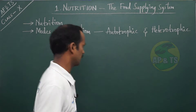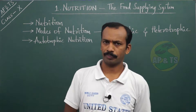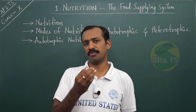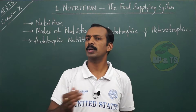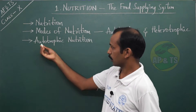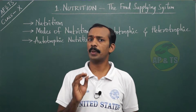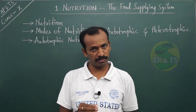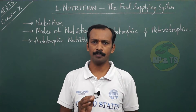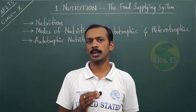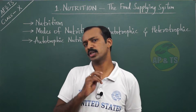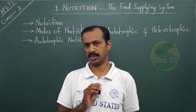What is autotrophic nutrition? Autotrophic nutrition is the type of nutrition in which living organisms obtain food by themselves. They don't depend on others; instead, they prepare their own food by a process called photosynthesis. Not only do they prepare their own food, but they also prepare food for other organisms.